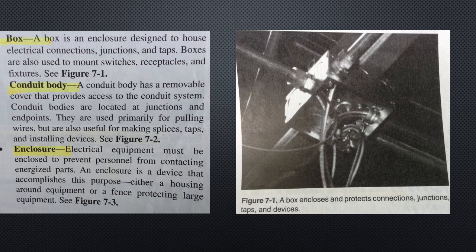There are several types of enclosures listed on the left side of the screen. Our first, box: a box is an enclosure designed to house electrical connections, junctions, and taps. Boxes are also used to mount switches, receptacles, and fixtures. You can see that in the figure on the right side, 7-1.